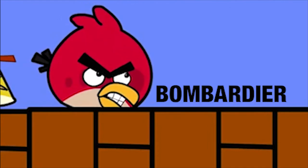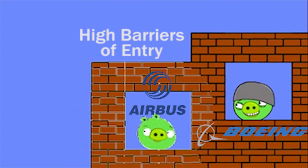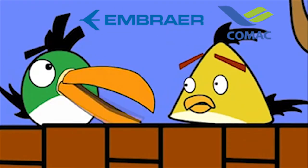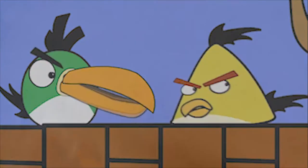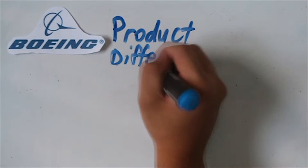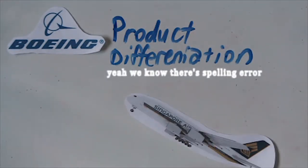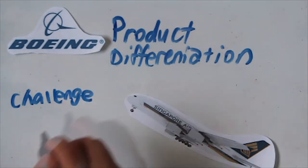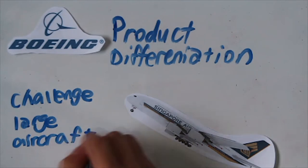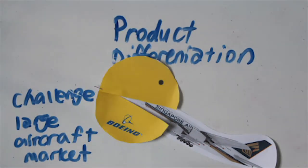With high barriers of entry, other aircraft manufacturers like Bombardier struggled to break the Airbus-Boeing duopoly. As long-standing rival duopolists, both Boeing and Airbus resort to various product differentiation and price-cutting strategies to consolidate their market influence. The most prominent example we will be analyzing in this video using game theory is Boeing's controversial response to the introduction of the Super Jumbo Jet A380 by Airbus.